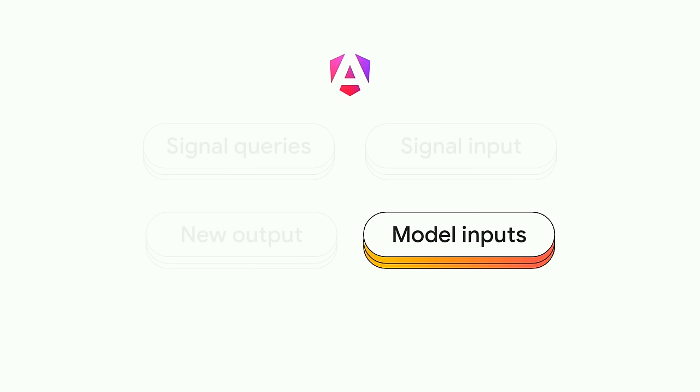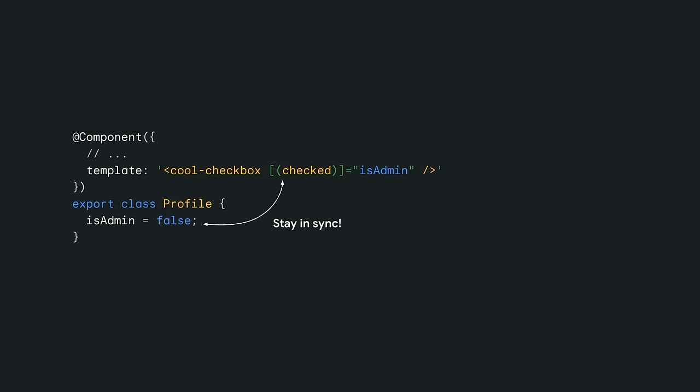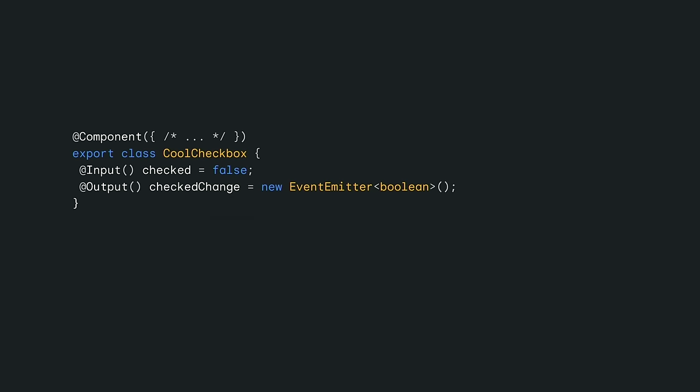That brings us to model inputs. To talk about model inputs, we need a brief aside on two-way binding. Sometimes you have a bit of state you want to keep in sync between two components, and Angular has had a feature for this called two-way binding. In this example, whenever the isAdmin value updates, the checked property of the checkbox also updates, and the other way around. In the past, if you wanted to make a property two-way bindable, you had to introduce an input, then also introduce an output with the same name as the input but with 'Change' on the end, and make sure that the output emits the same type as the input. This looks pretty clunky.